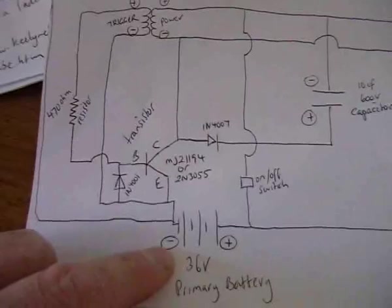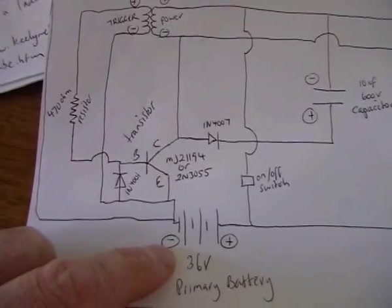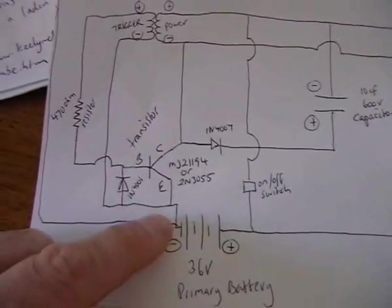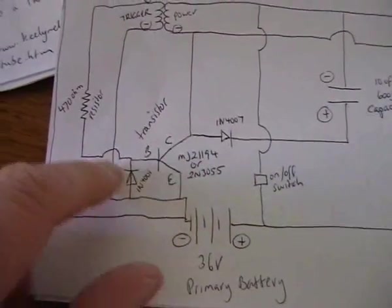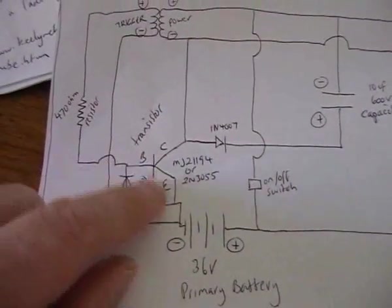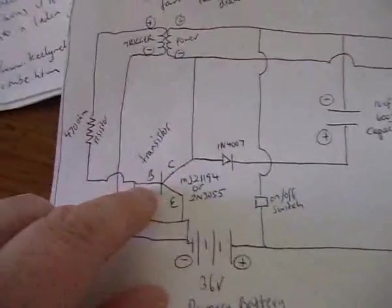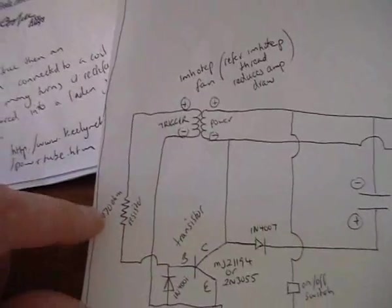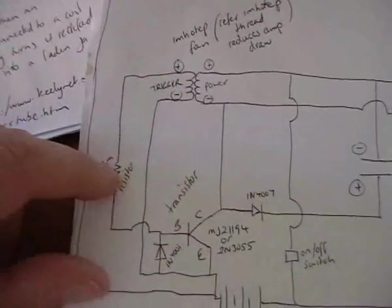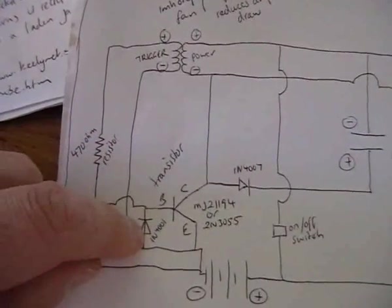Okay, my circuit starts with 36 volts, powering a MJ21194 transistor. It's pretty much a Bedini type circuit in this section here. The only modification here is there's a 470 ohm resistor there, which is pretty standard, high-end 4001.